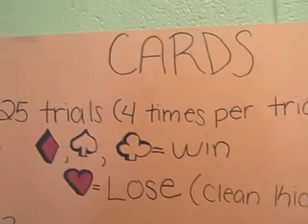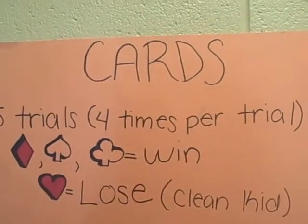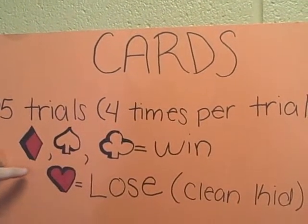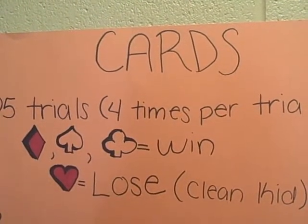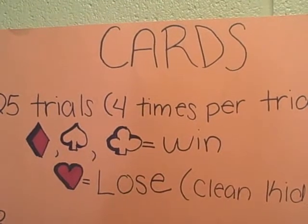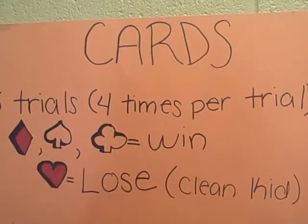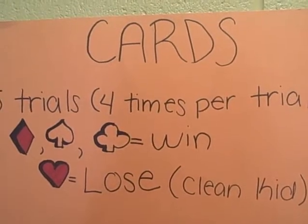Our first example is with cards. You do 25 trials, and four draws equals one trial. Diamonds, spades, and clubs count as a win, meaning that kid has the disease. If you draw a heart, it means that kid is clean — they don't have the disease.